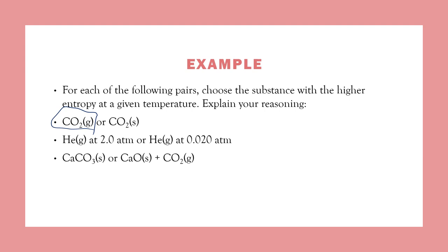For the next example, we have helium gas at 2 atm or helium gas at 0.02 atm. Well, this one is going to have the greater entropy. It has lower pressure, so it has more space to move around and can have more potential microstates, so it will have a greater amount of entropy.